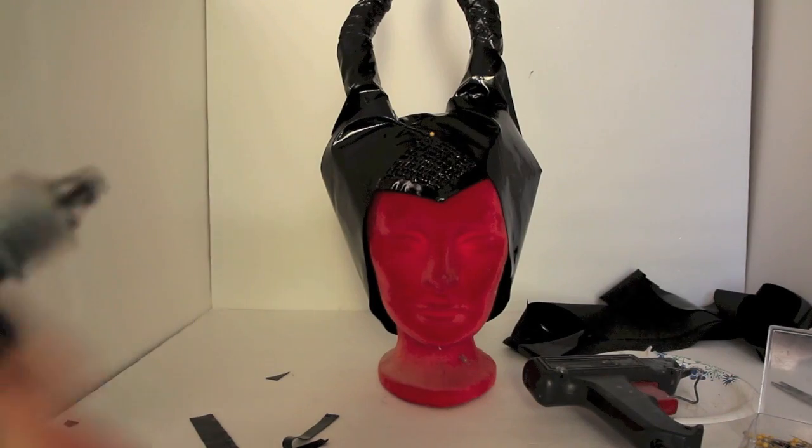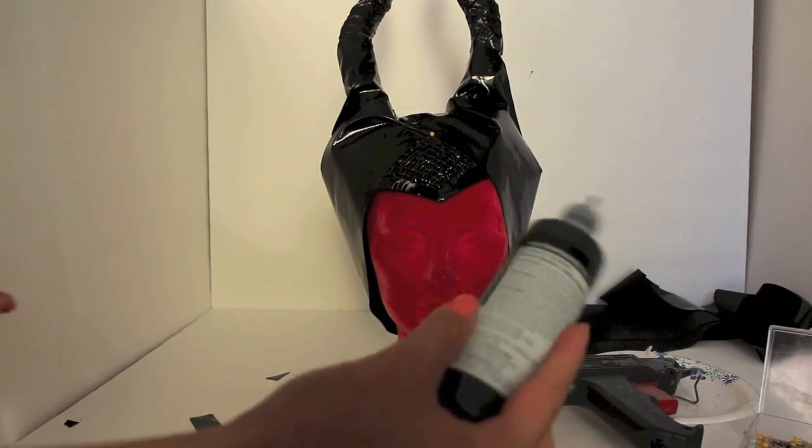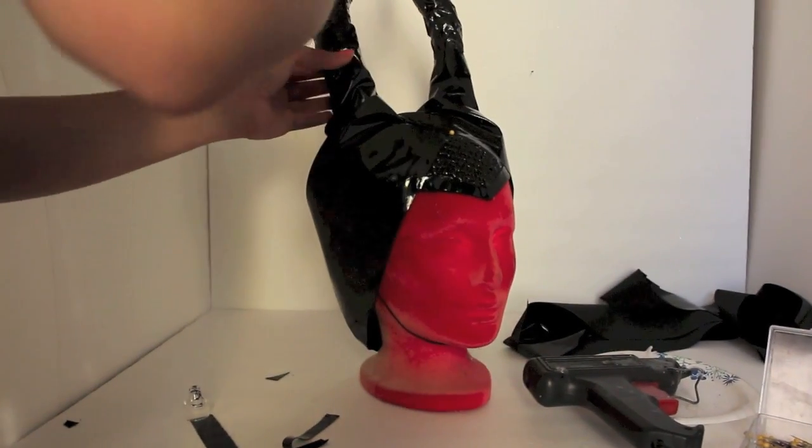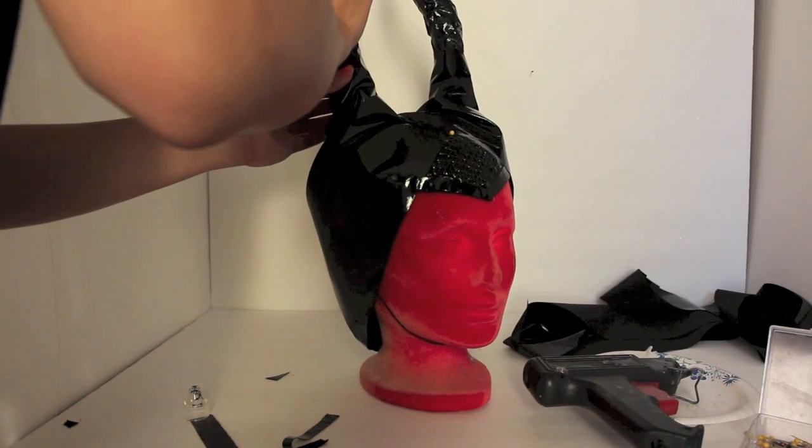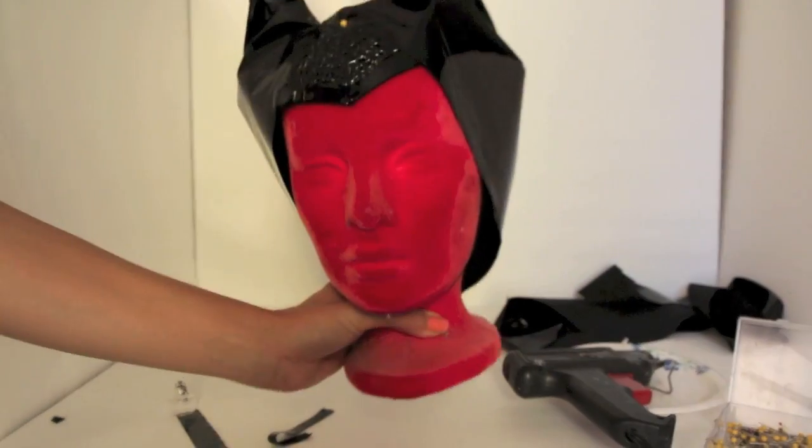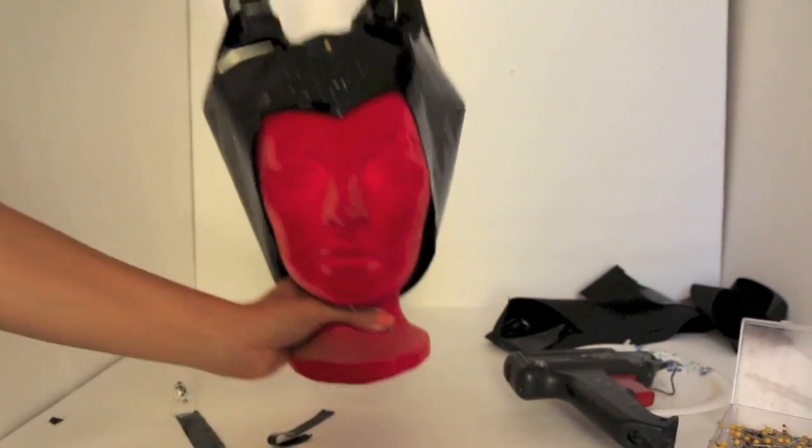And then grab your puffy paint again, and we're actually going to be doing the same method on your horns. You're actually going to be taking your puffy paint, circling around your horns a few times, let it dry. I repeat this about three times, and then it's just going to create some cool texture on your horns. Let it dry, and we're actually pretty much done.